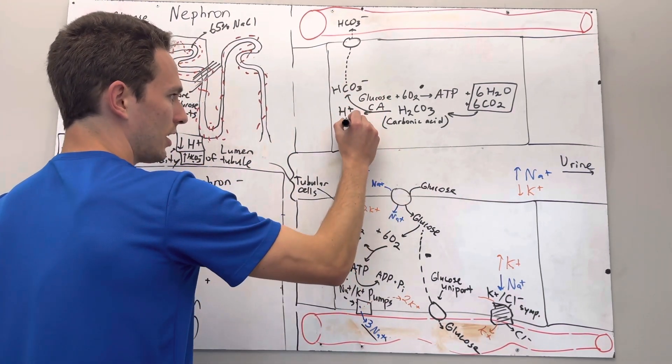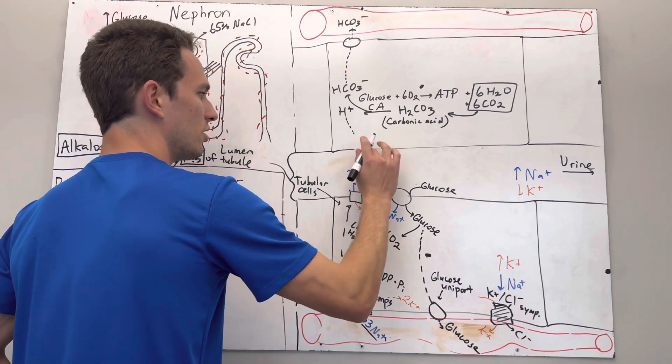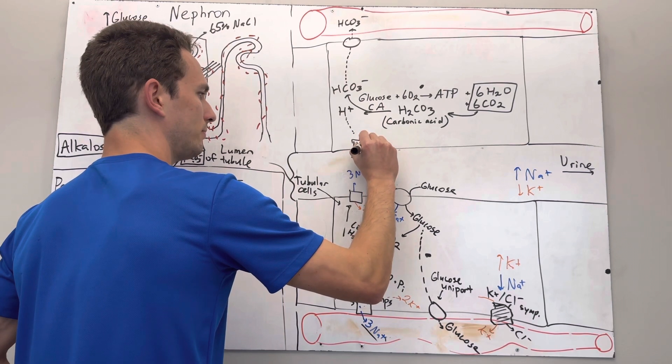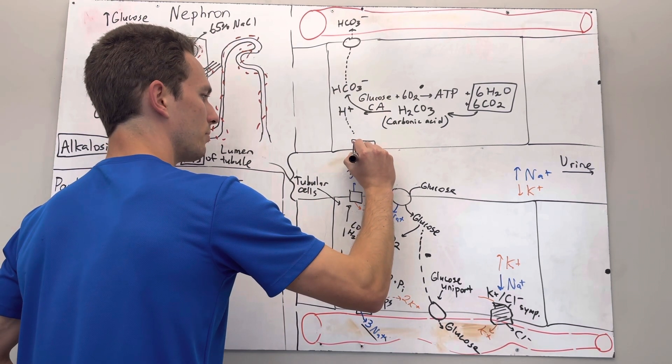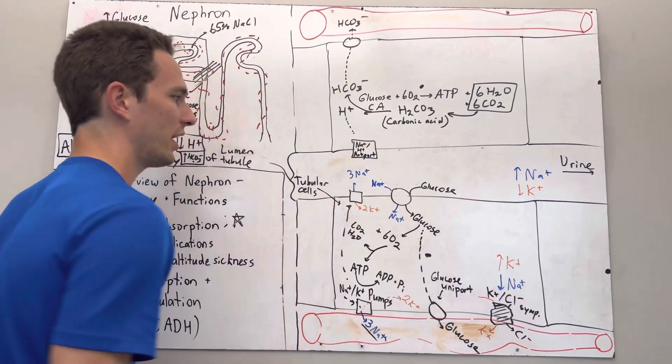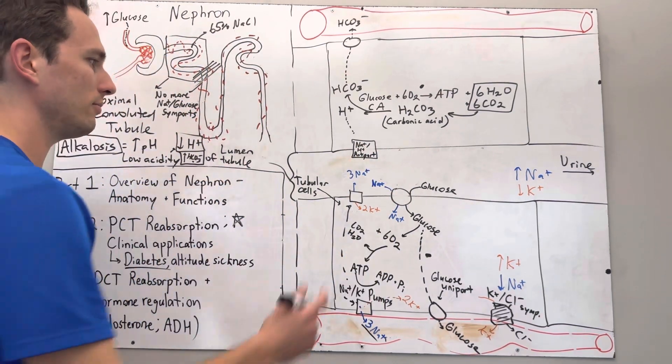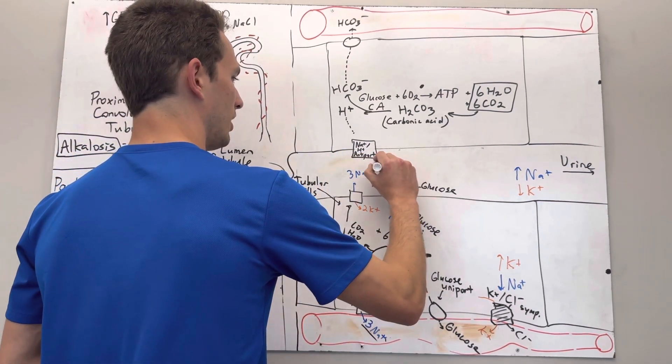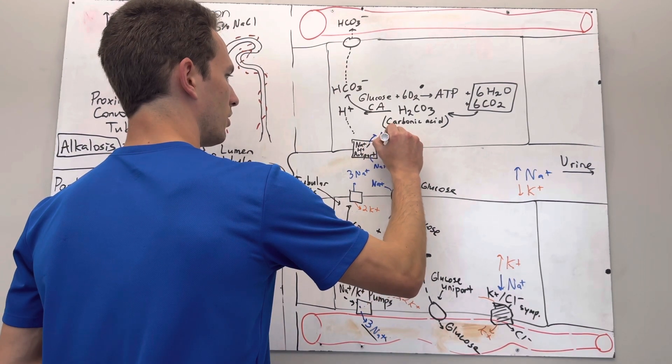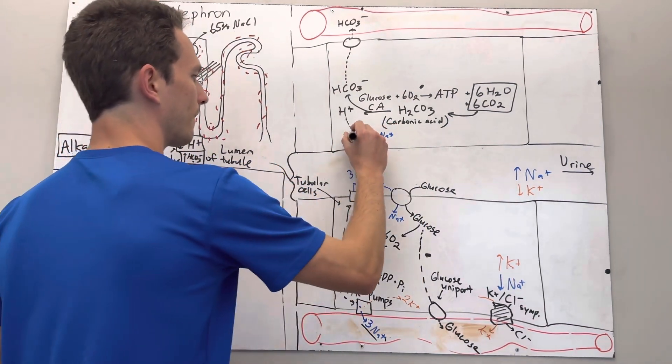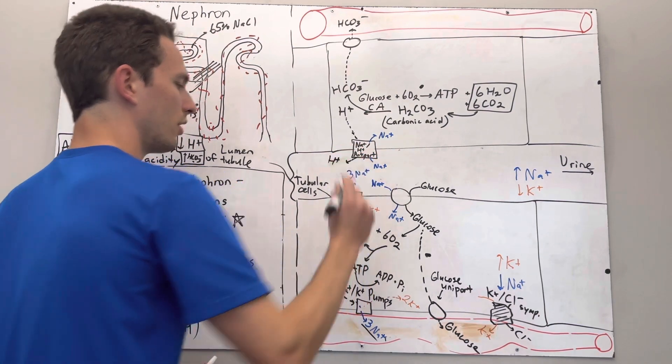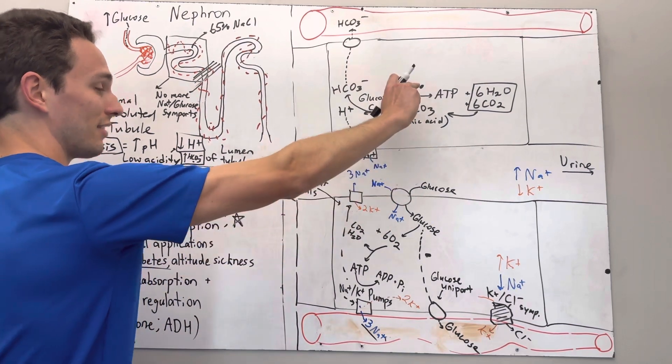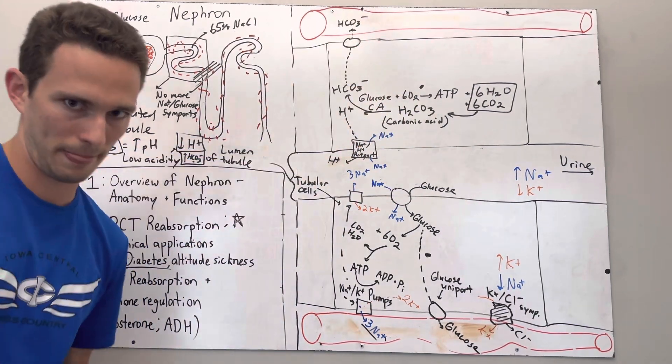This hydrogen ion can actually go to this, what's called an antiport. This is going to be a sodium hydrogen antiport. What does that mean? Well, we know that sodium is really high outside the cell. So sodium is going to actually be brought in to the cell, and we're going to kick hydrogen out of the cell. So now we've got hydrogen being kicked out of the cell, sodium being kicked into the cell, and bicarbonate going into the bloodstream.